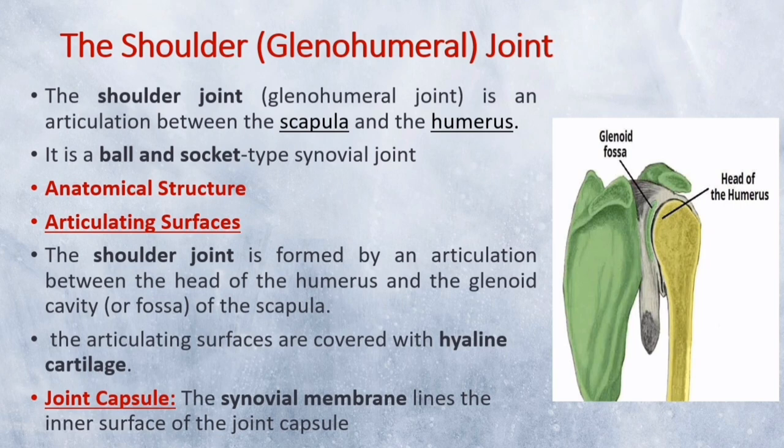The joint capsule is a fibrous sheath which encloses the structures of the joint. It extends from the anatomical neck of the humerus to the border of the glenoid fossa. The joint capsule is lax, permitting greater mobility, particularly abduction. The synovial membrane lines the inner surface of the joint capsule and produces synovial fluid to reduce friction between the articular surfaces.